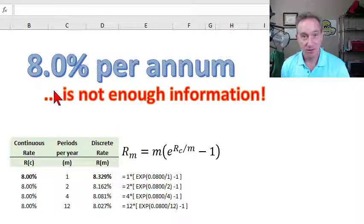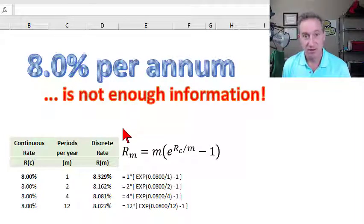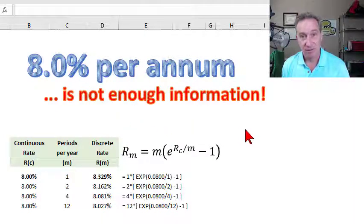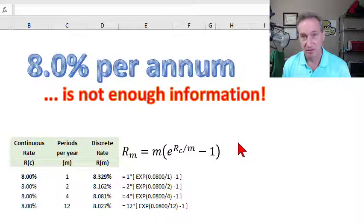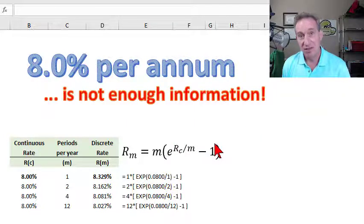If we're told the interest rate is 8% per annum, we actually don't have enough information to discount or compound forward. I'd like to compare a discrete compound frequency to a continuous compound frequency and show you the formulas for translating between the discrete and continuous compound frequencies.